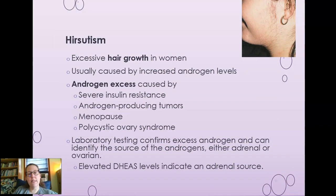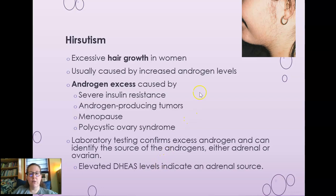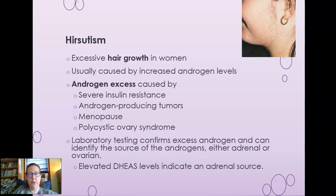Let's talk about hirsutism — excessive hair growth in women, specifically hair growing where it's not supposed to, like facial hair in a male pattern. You may even have deepening of the voice and hair thinning on the scalp. It's usually caused by increased androgen levels — testosterone, DHEA, and others. Androgen excess can be caused by severe insulin resistance, androgen-producing tumors, menopause, and polycystic ovary syndrome. Lab testing can confirm excess androgen and identify the source — elevated DHEAS usually indicates an adrenal source.